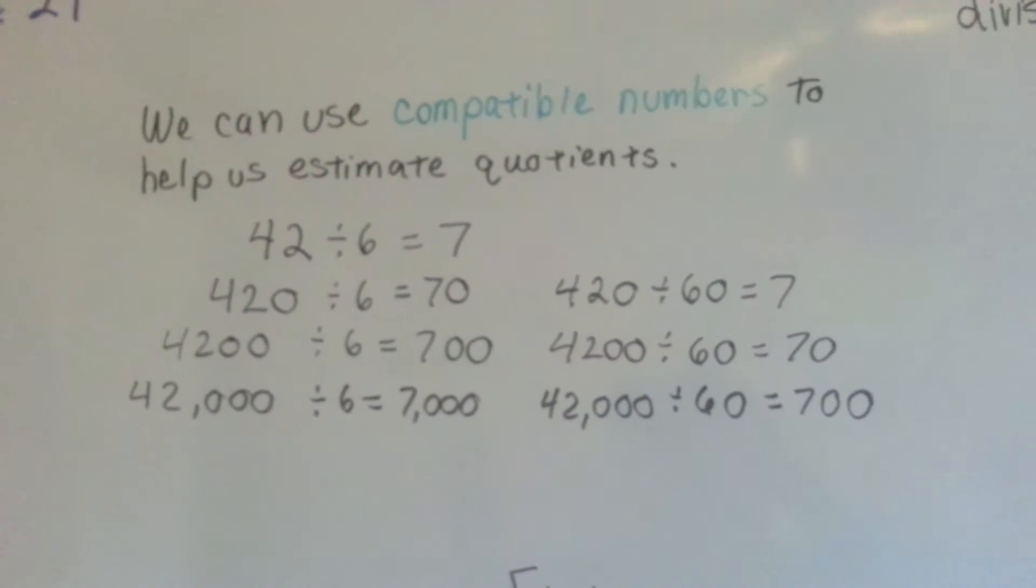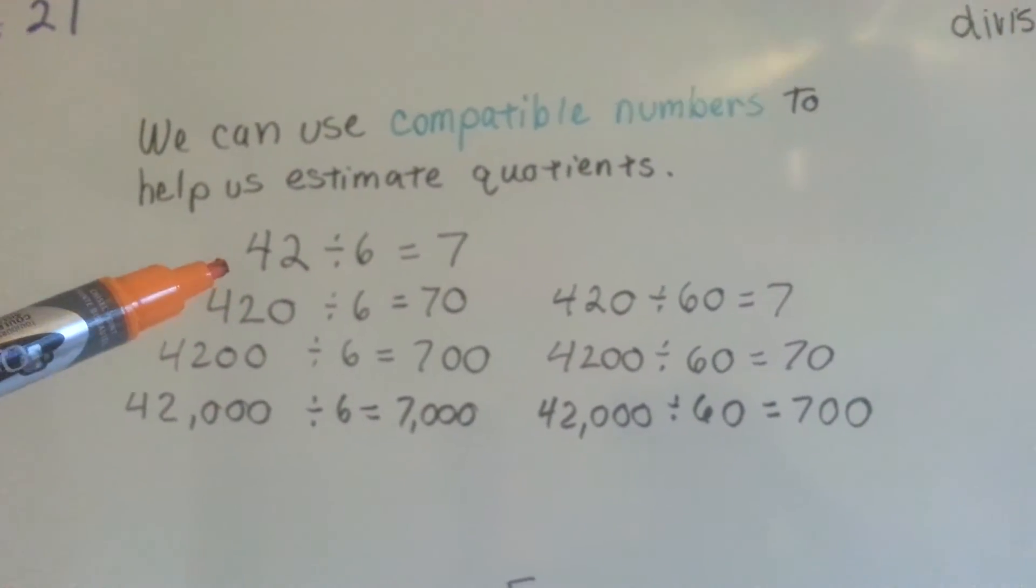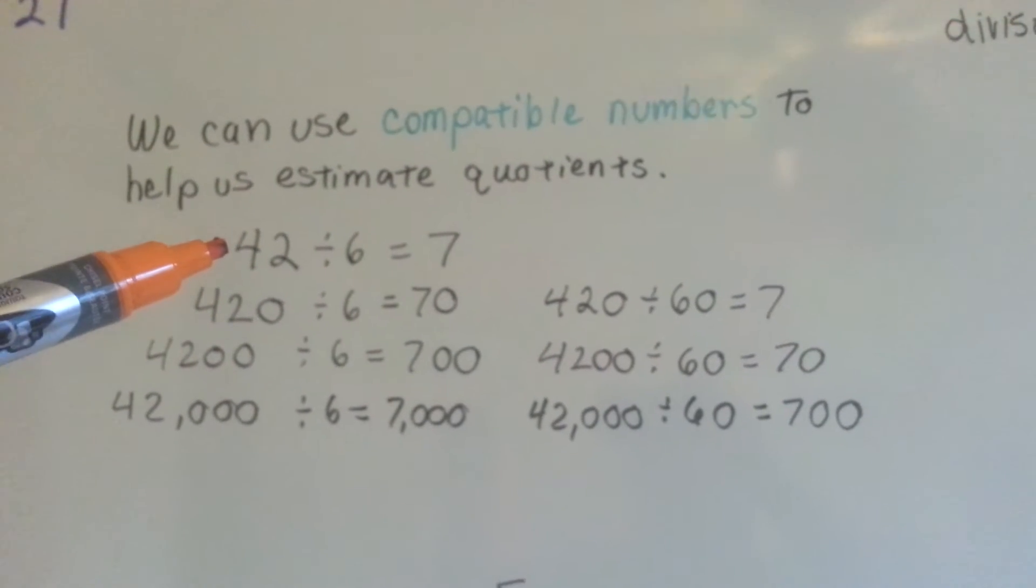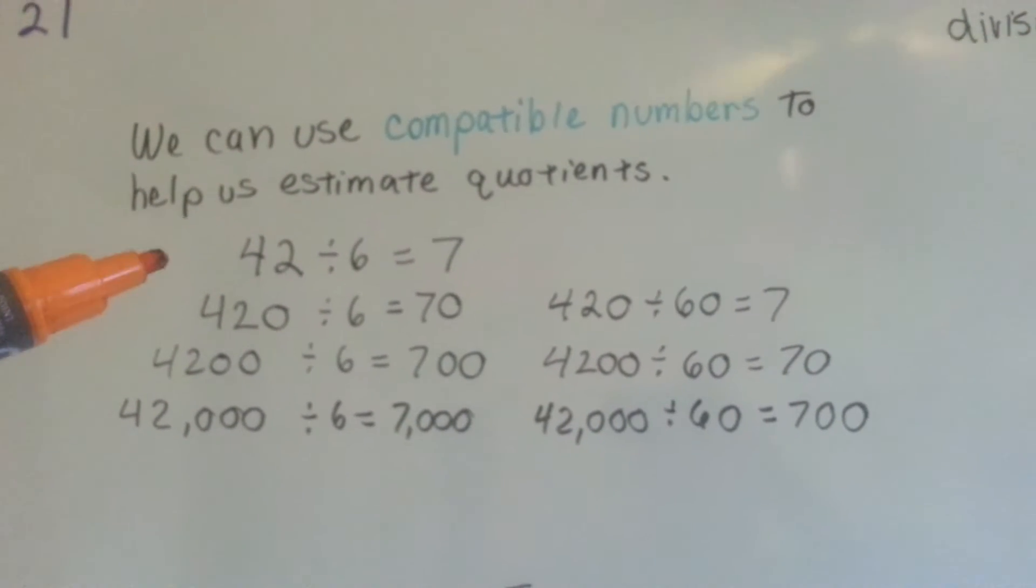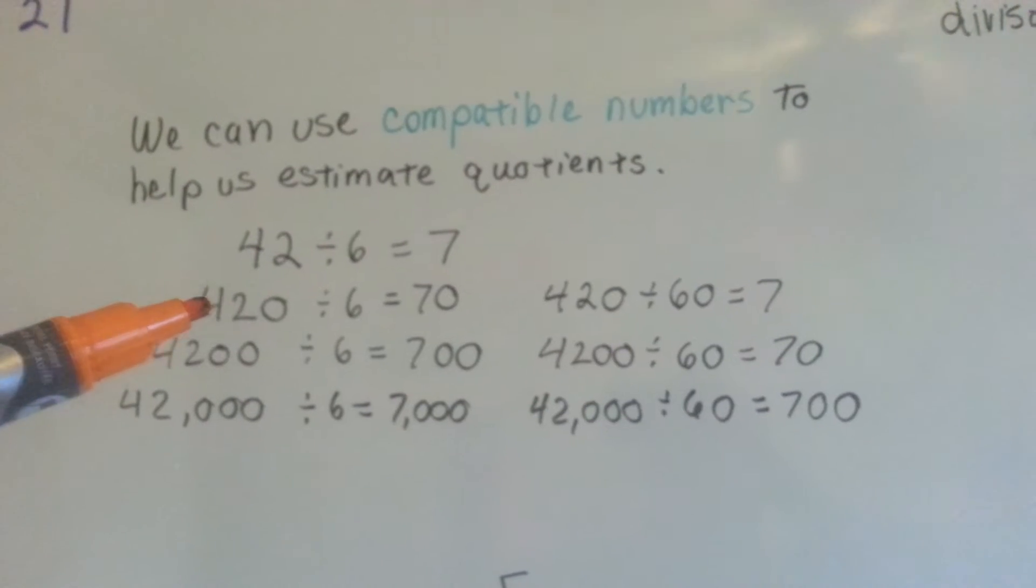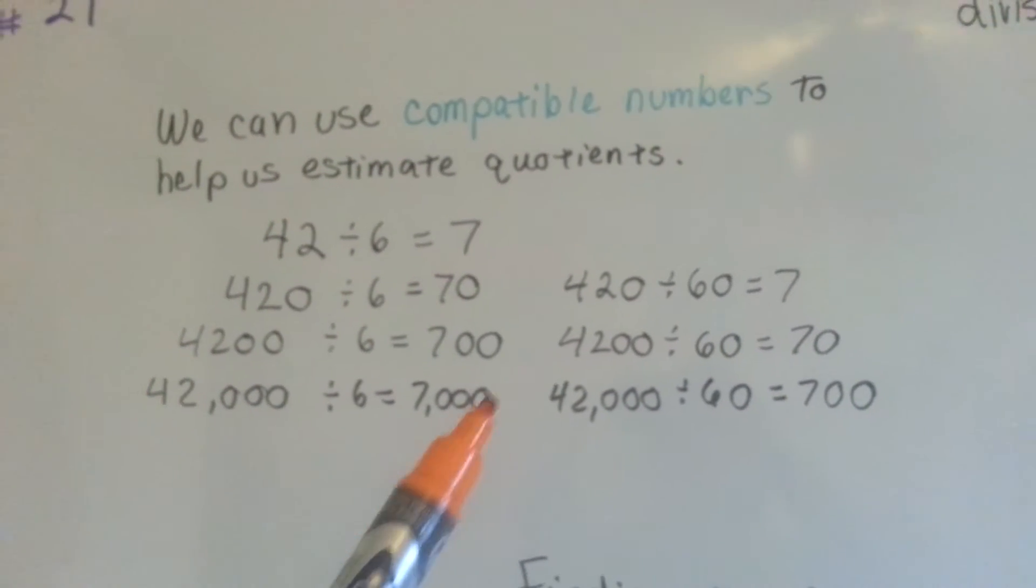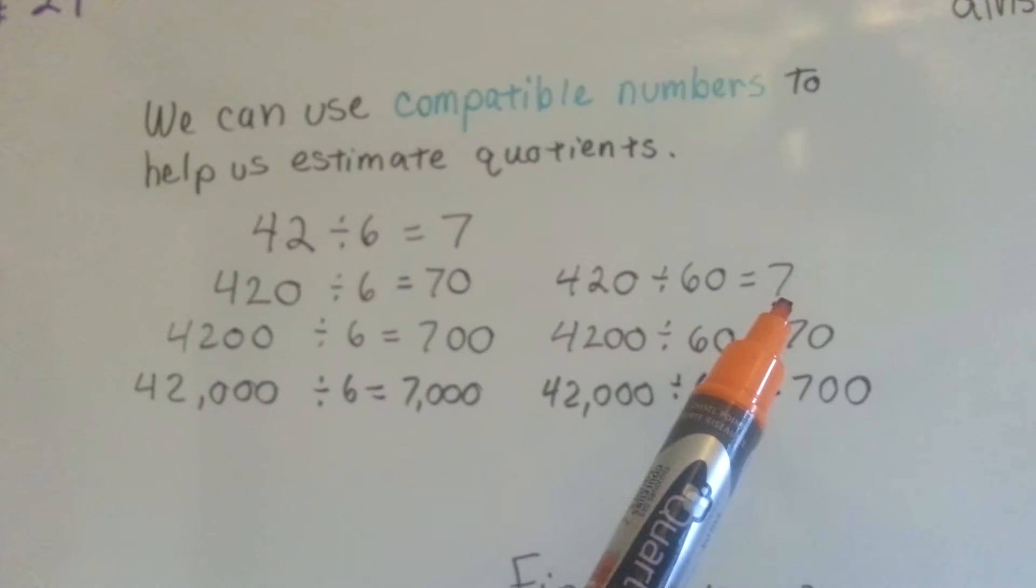If you think of compatible numbers like 6 times 7 is 42, so 42 divided by 6 is 7, that will help you estimate bigger numbers like 420 divided by 6 would be 70. Or we could switch it up and say 420 divided by 60 is 7.